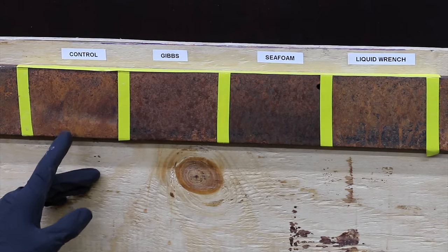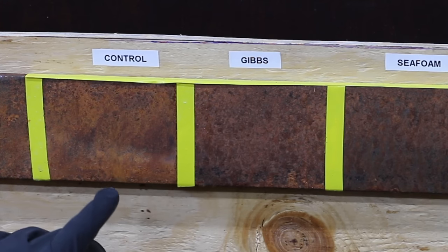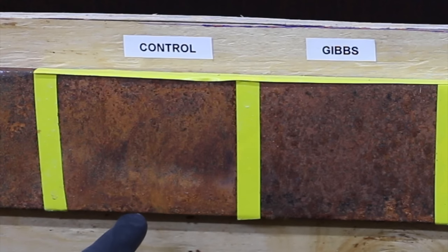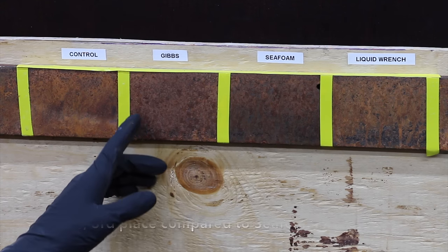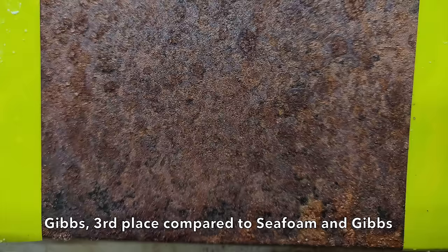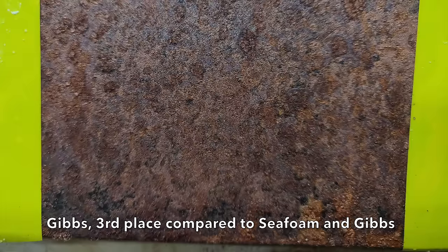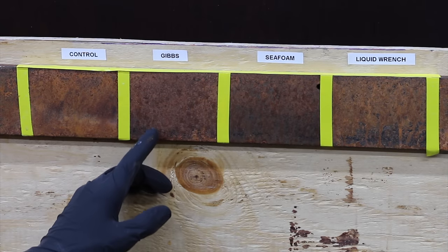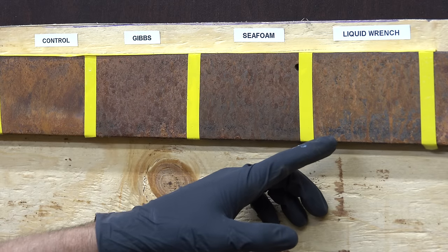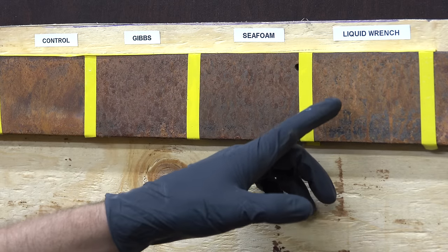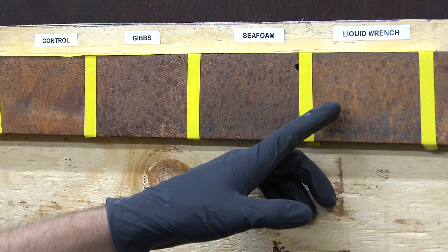All three products beat our control. You could see that corrosion has covered the entire surface. There isn't a single space that I can see that doesn't have rust on it. In my opinion, Gibbs came in third place. You can see rust has fairly thoroughly coated the entire piece of metal, and some fairly deep rust has taken place, but it still beat the control. Seafoam and liquid wrench are fairly close. There looks to be a little bit more rusting with liquid wrench, and the rusting seems to be a little bit deeper into the metal.